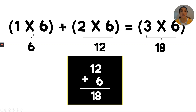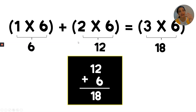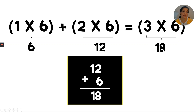Two times six is 12. I can count by two six times or count by sixes two times according to the commutative property. Counting by two six times: 2, 4, 6, 8, 10, 12. So one row of six is six, two rows of six is 12. Three rows of six should be 18, because 12 plus 6 equals 18.